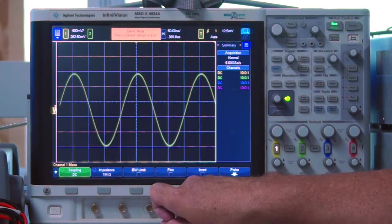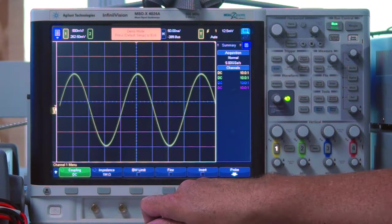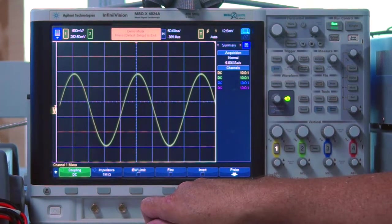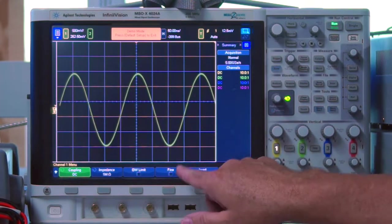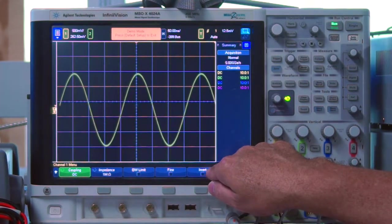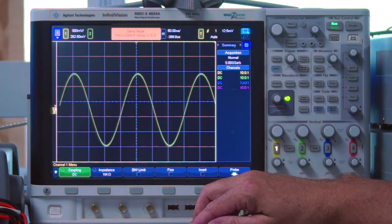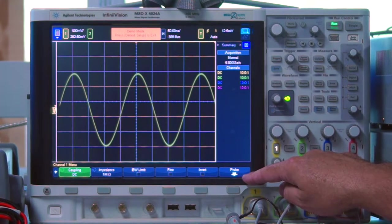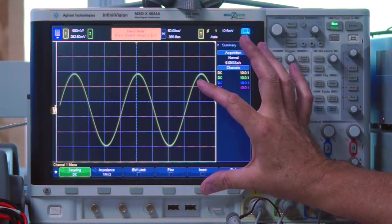Bandwidth limit is a limitation that the manufacturer can put in there as to what's the highest frequency that I can accept into that channel when I turn that on. Typically, it's around 20 megahertz, but you'd have to see the specification from each manufacturer for what that bandwidth limit is. I'm not going to talk about FINE, but we'll talk about the invert. And all invert does is flip the signal over. So that's all that invert does on that. And in a future video, we'll talk a little bit about the probes and probe compensation. So that's kind of the vertical section again used for measuring the amplitude of a signal.